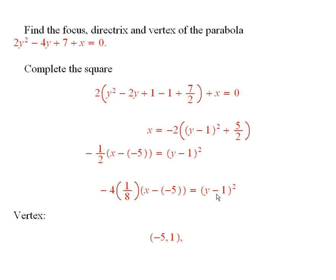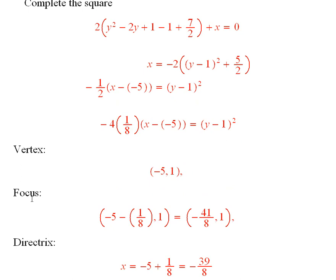This 1 is equal to q. So, the vertex is (-5, 1). The focus is -5 minus the c here, because that's what it says to do, and then 1 is the other coordinate, and that's (-41/8, 1).